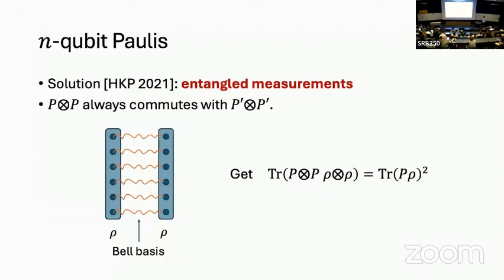However, you can overcome this obstacle by using entangled measurements. The insight is: if I have a Pauli P, it might anticommute with P', but P⊗P always commutes with P'⊗P'. For example, X⊗X always commutes with Z⊗Z. There's a simultaneous eigenbasis on two registers of all the P⊗P operators — it turns out this is the Bell basis. Measuring ρ⊗ρ in the Bell basis lets me simultaneously estimate all trace(P⊗P · ρ⊗ρ) = trace(Pρ)², and I can get the magnitude of all these expectation values with logarithmic scaling — log(4^n), which is linear in n.